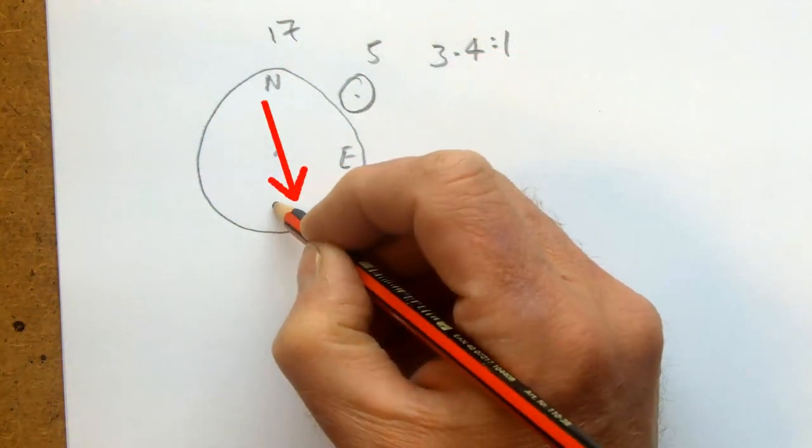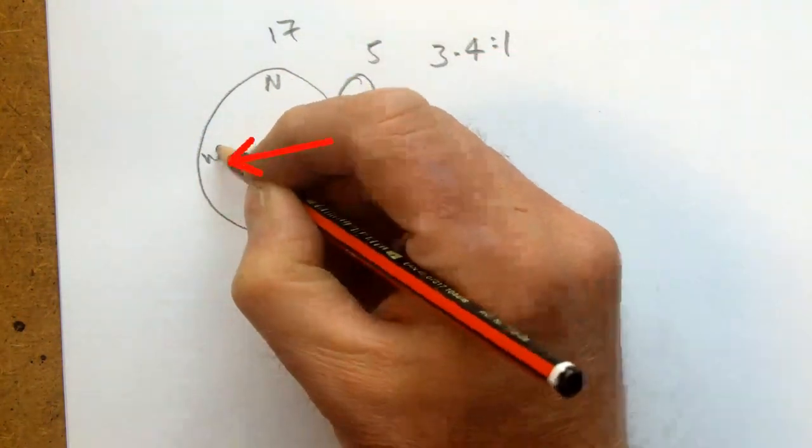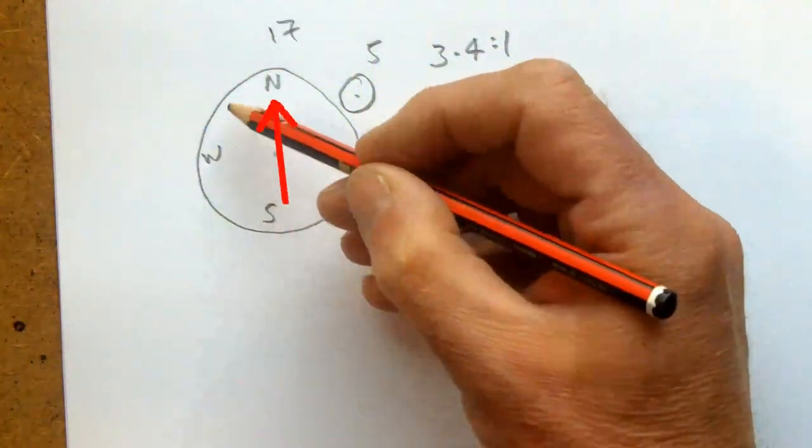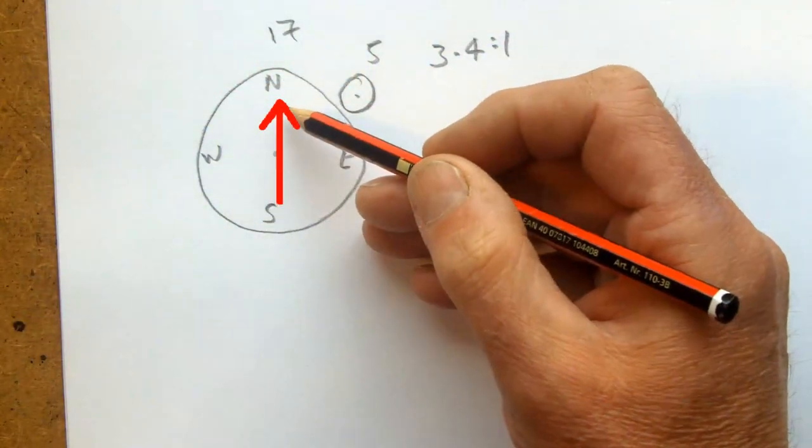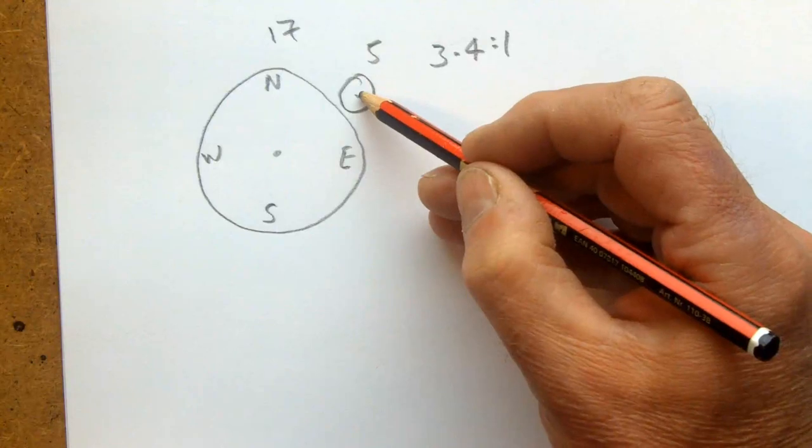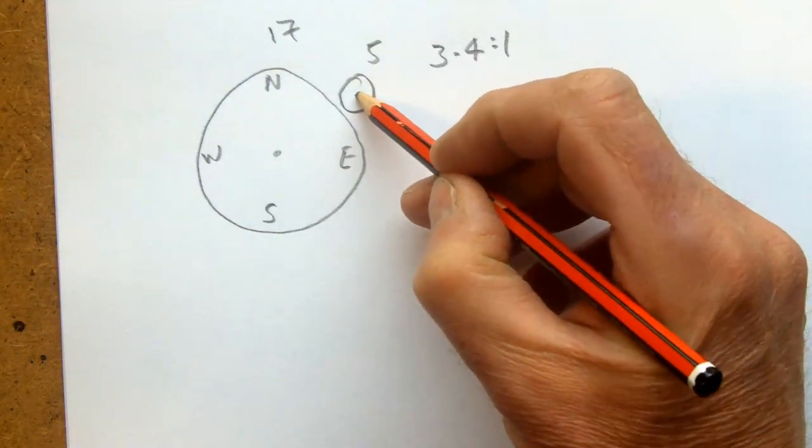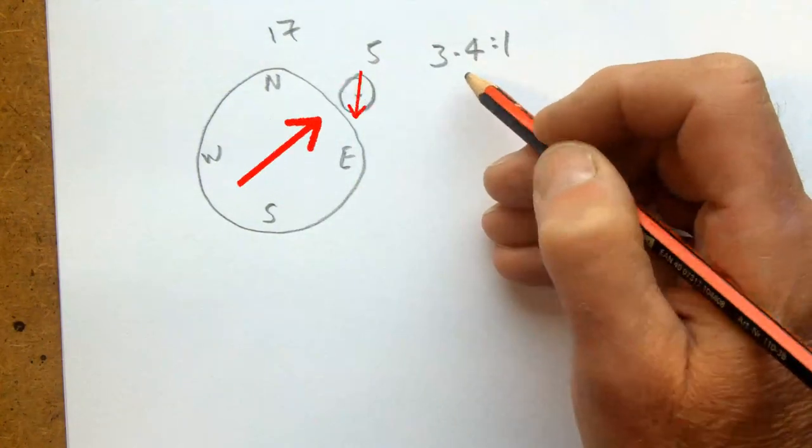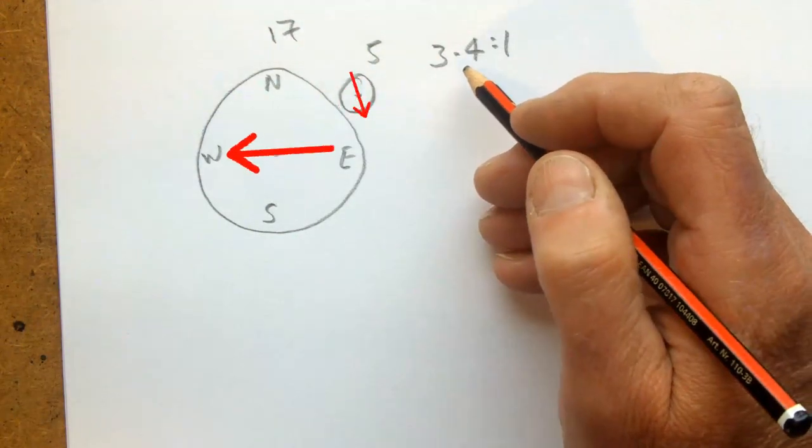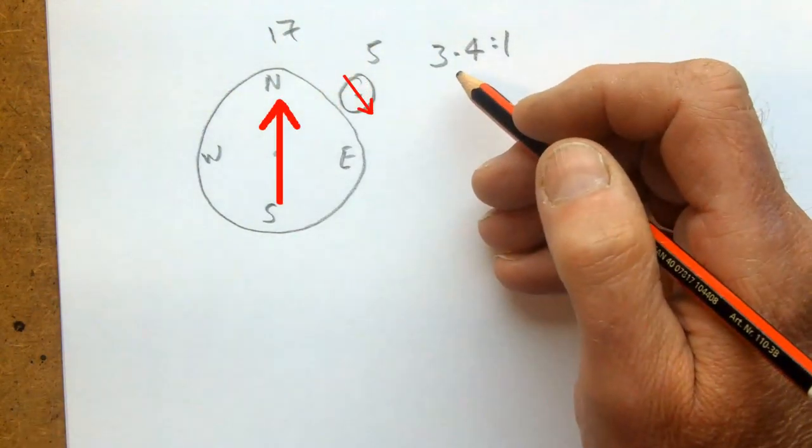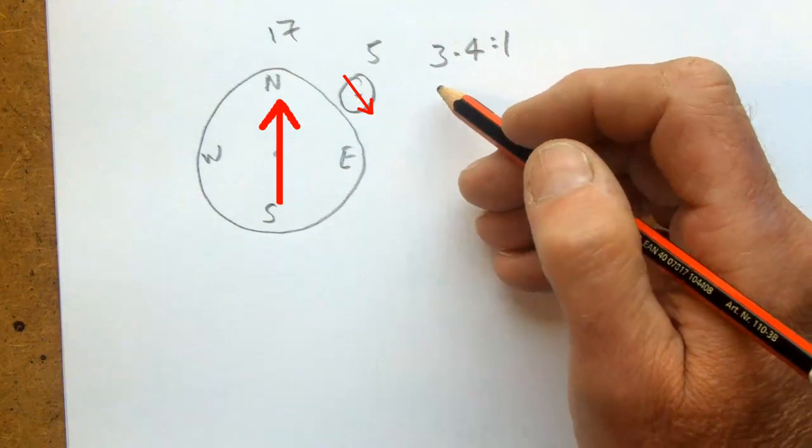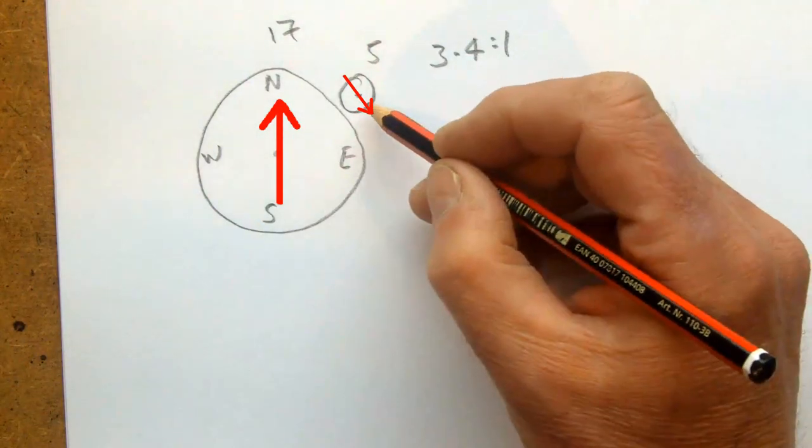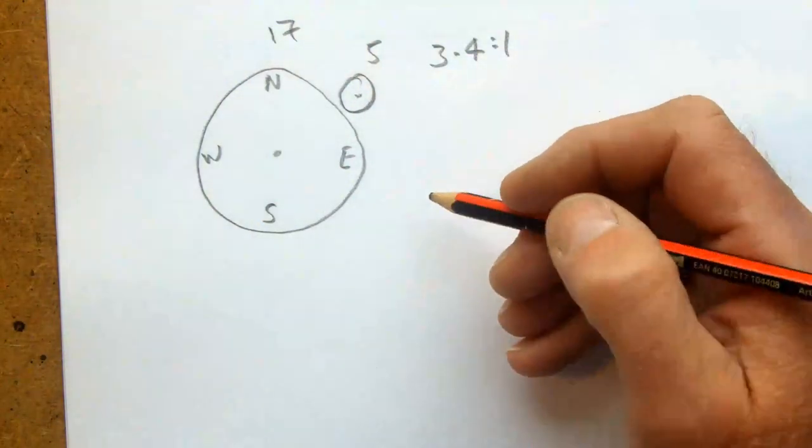So every time the rotator turns from north, east, south, west - that's turned 360 degrees - this drive for the potentiometer will turn around 3.4 times. And that's fine, no problems with that. That's what I've worked with, so that 10-turn potentiometer.